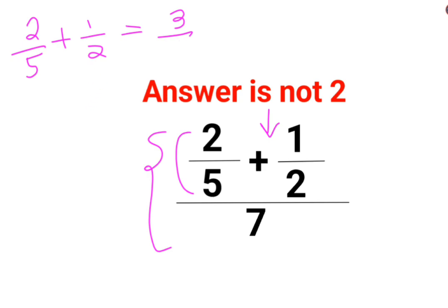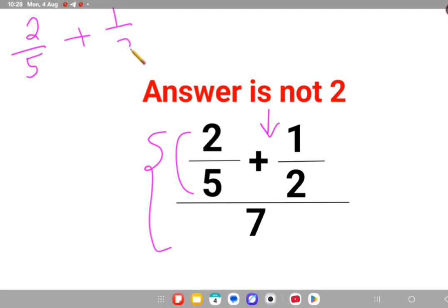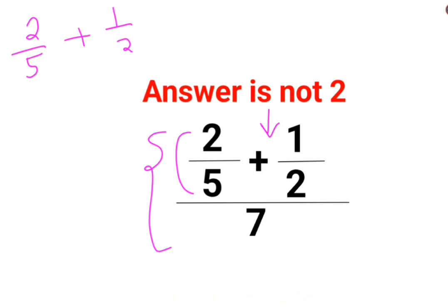So if the denominators are not equal, then in that case what we should do? At this point what you can do is you need to convert the denominator to be same.